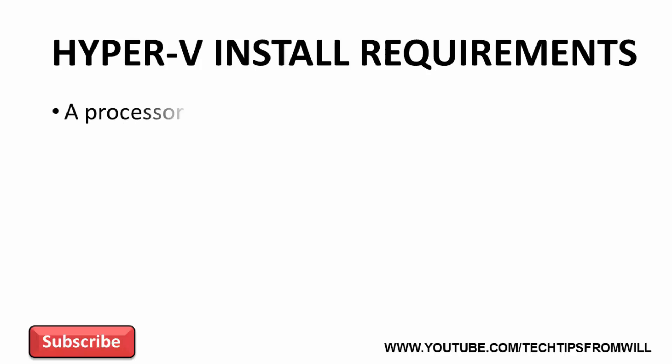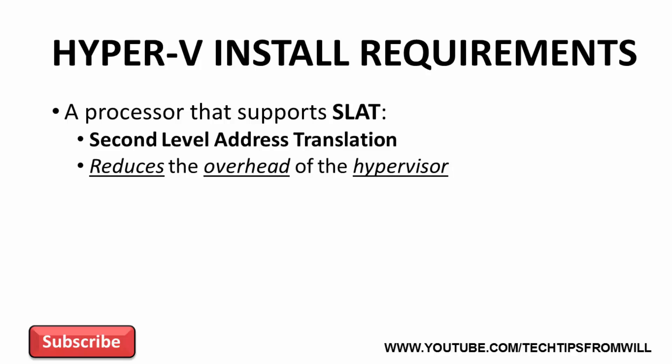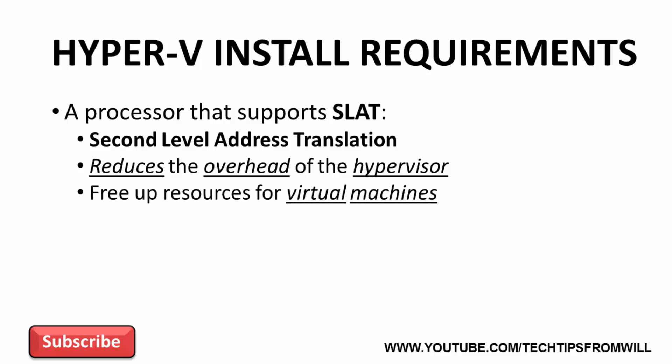The next requirement is a processor which supports SLAT, or 2nd Level Address Translation. In a nutshell, 2nd Level Address Translation is a feature designed to reduce the amount of overhead generated from the hypervisor. Hyper-V is a hypervisor that runs at the operating system level and, just like an operating system, requires resources such as CPU and RAM in order to work. By reducing the overhead of the hypervisor, more resources in the computer are freed up for your virtual machines.